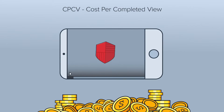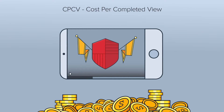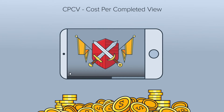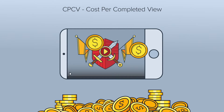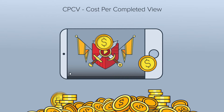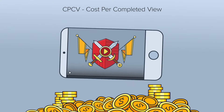CPCV stands for Cost Per Completed View. This bid type is unique in that it only applies to video ads. Once a user completely views a video in your game, you earn revenue.